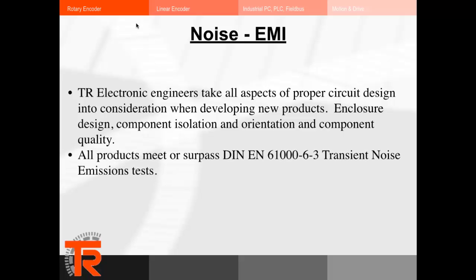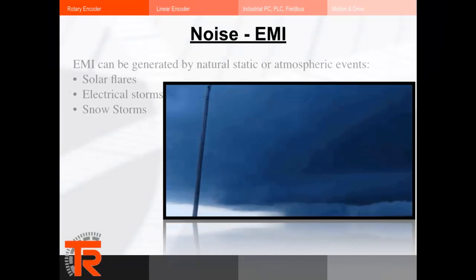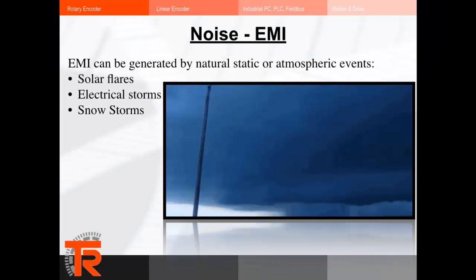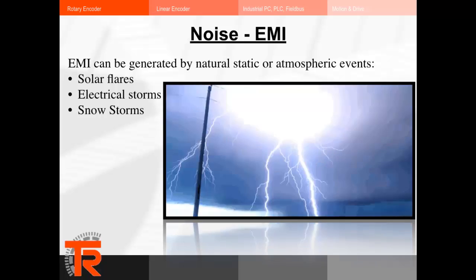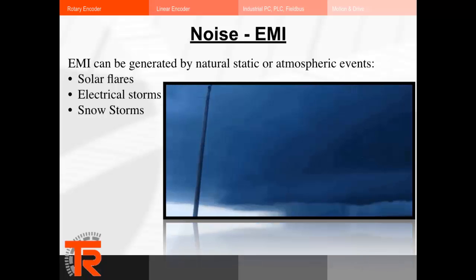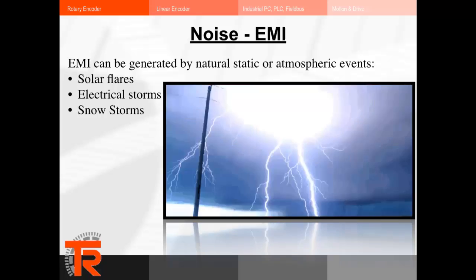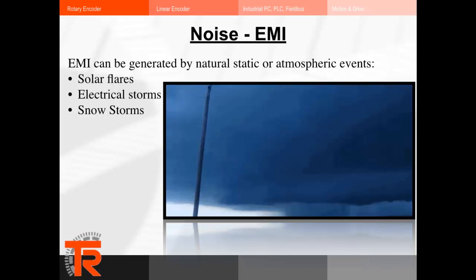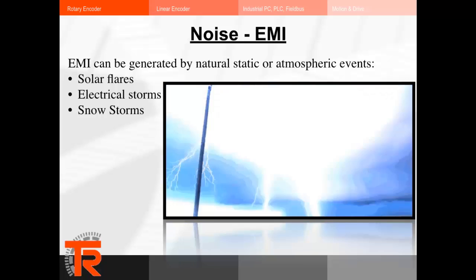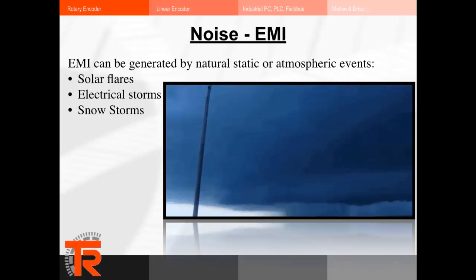All products meet or surpass DIN EN 6163 transient noise emission tests. EMI can also be generated by natural or static or atmospheric events, such as solar flares, electrical storms, and even snowstorms. Obviously we can't do much to stop this kind of noise from occurring; however, proper EMC can ensure that its effects are minimized.